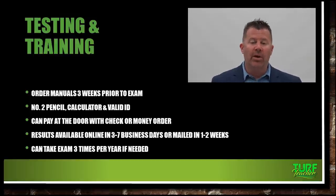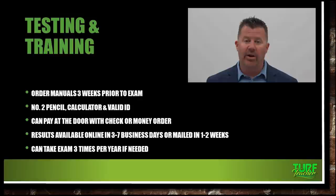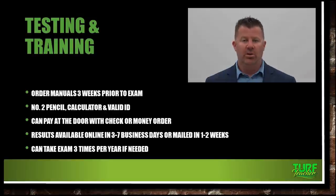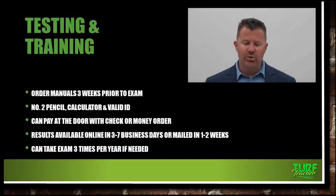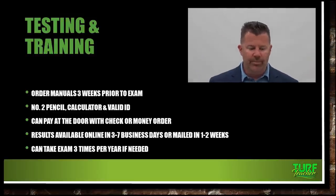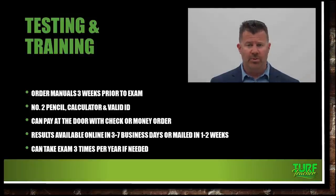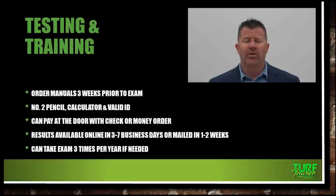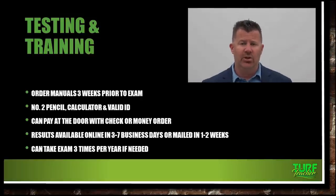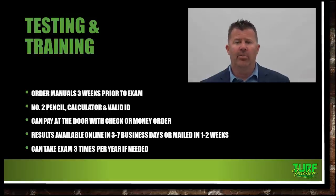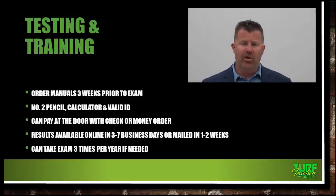It is very wise to go ahead and order your textbooks three weeks prior to going to sit for the exam. That way you can go over the information, start reading the chapters and answering the sample questions in the books. You'll need a number two pencil, a calculator, and a valid ID. You can pay at the door with a check or money order, no cash. Your results will be available in three to seven business days, or if you choose to have them mailed, it could take up to two weeks.